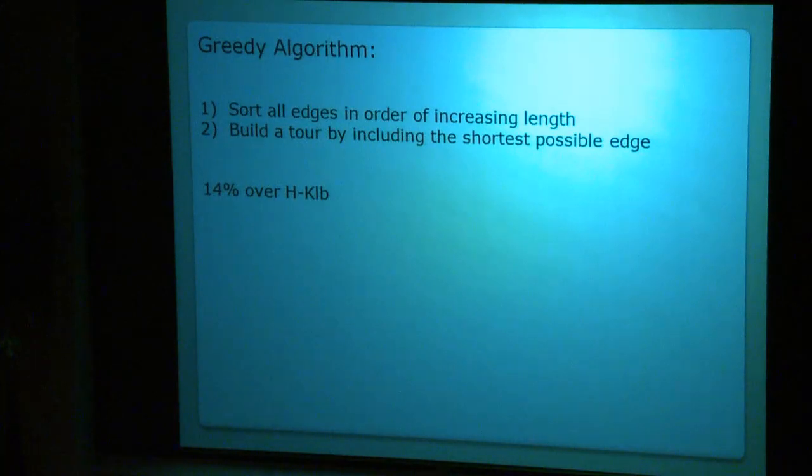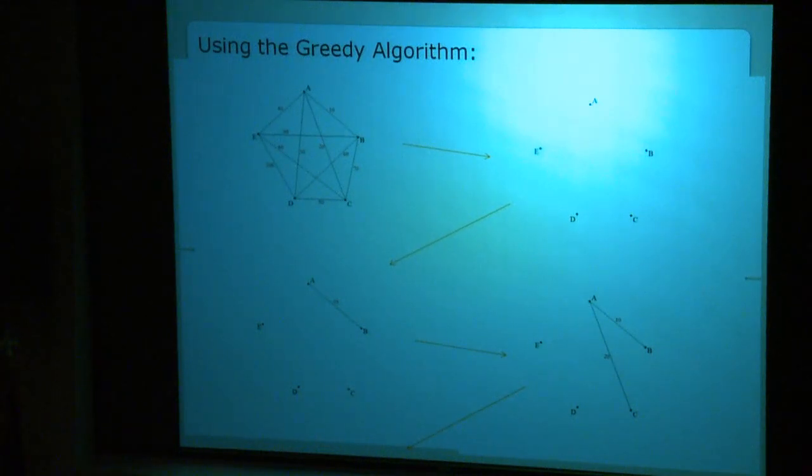Probably the most famous algorithm we know is the greedy algorithm. For this algorithm, we start by sorting edges, connections between cities. We make a list starting with short connections, and then we end up with long ones. And then by choosing short connections, we hope to find optimal route. And actually that algorithm on average turns out to be about 14% over the optimal solution. There are two limitations that we have to be very careful about. No vertex can exceed degree 2, so there can be only one road going to the city and one road leaving the city. And also we cannot close short cycles, meaning we cannot have a tour of, for example, three cities instead of including all the cities.